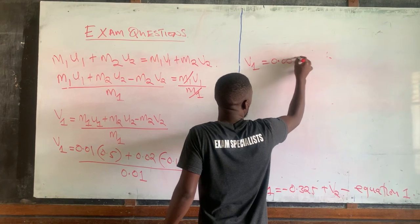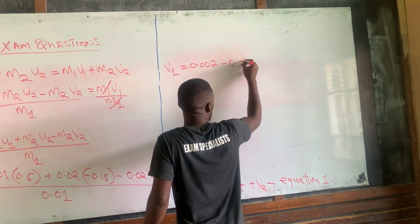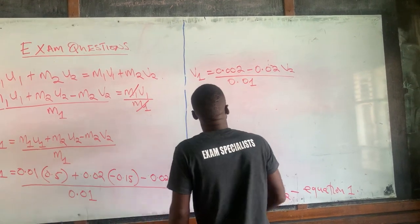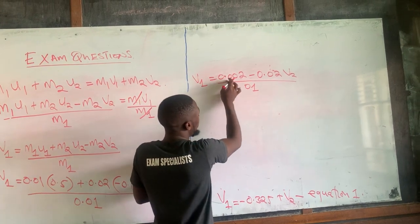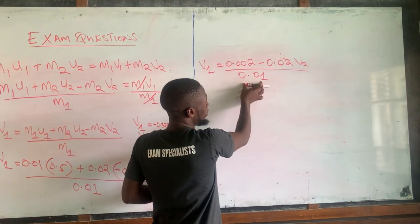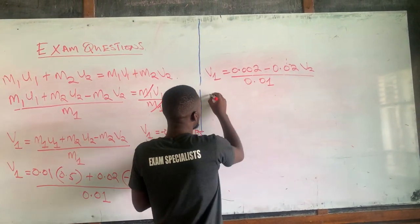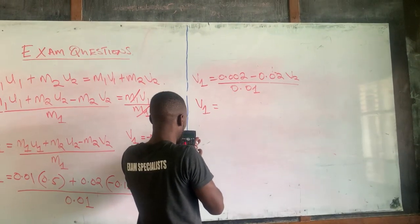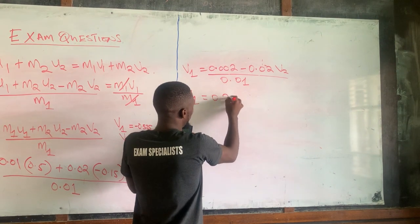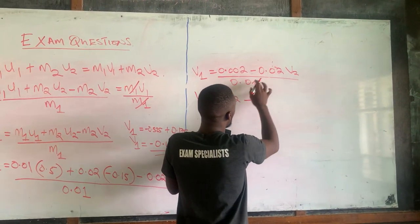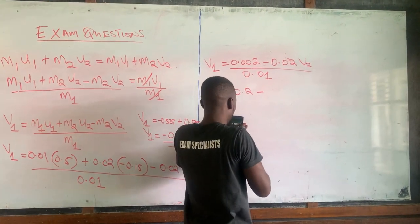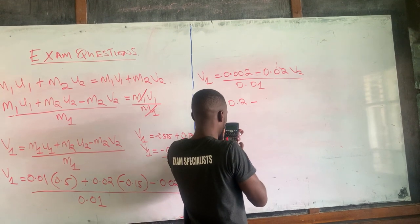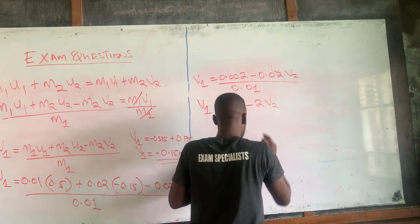So v1 equals (0.002 minus 0.02·v2) divided by 0.01. Dividing through by 0.01: v1 equals 0.2 minus 2·v2. This is equation number 2.